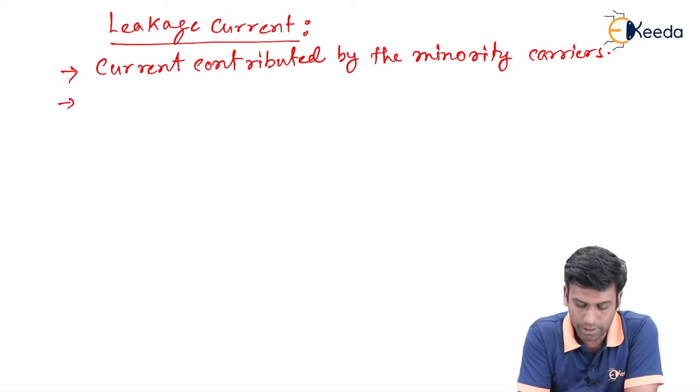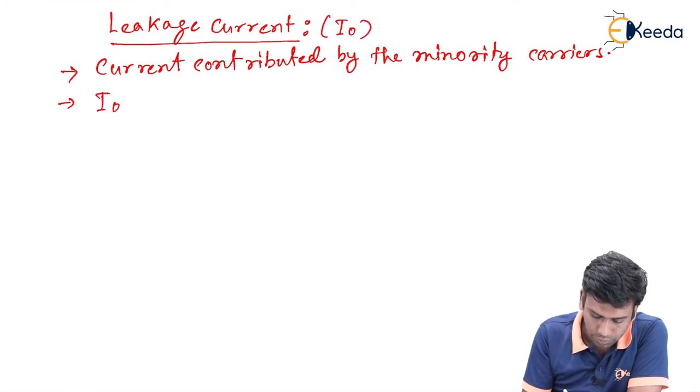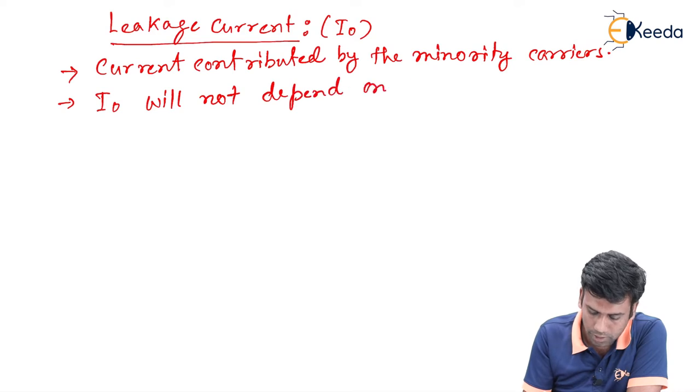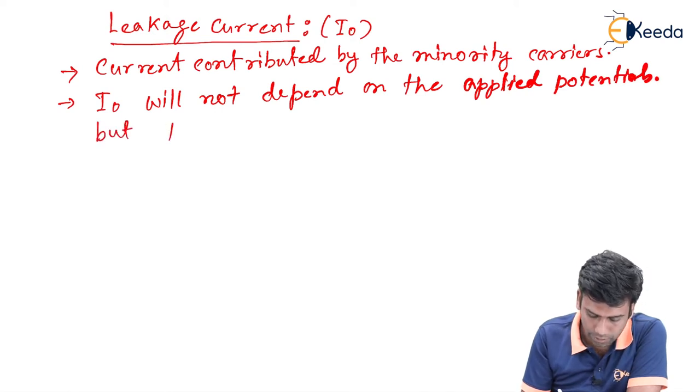Now this minority carrier current depends not only on the temperature, but it also depends on the atmospheric temperature. This minority carrier current or the leakage current is denoted by I0, and this I0 will not depend on the applied potentials.